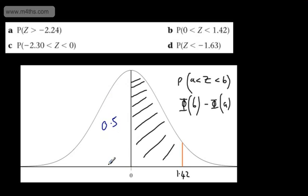Therefore, it being less than 0 is going to give us half. So all we're going to do in this particular case is find phi of 1.42 and subtract away from that 0.5. If you want to find phi of 0, you will see it's 0.5 anyway.